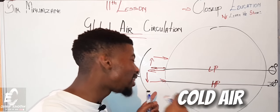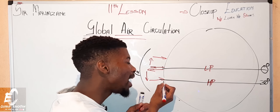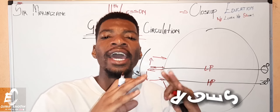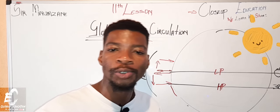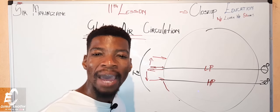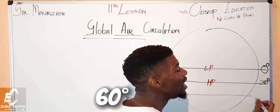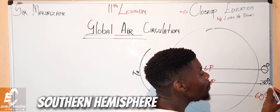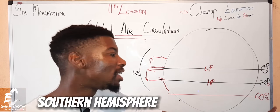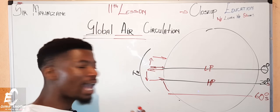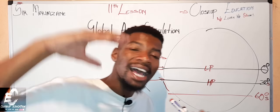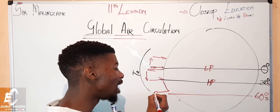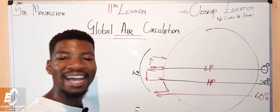The cold air that descended stays on the earth's surface until it converges with another air mass or receives direct insolation from the sun. This happens when we reach the 60-degree mark — 30 degrees south, 60 degrees south — and when the air converges or receives insolation, it will rise again.